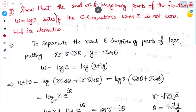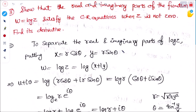The third problem: show that the real and imaginary parts of the function w = log z satisfy the Cauchy-Riemann equations when z ≠ 0, and find its derivative. To separate the real and imaginary parts of log z, we put x = r cos θ and y = r sin θ, i.e., polar form.